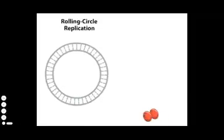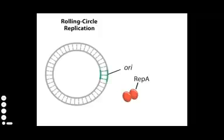In rolling circle replication, a replication initiator protein called RepA binds to a section of the double-stranded DNA called the origin of replication, or ORI. RepA is encoded by a plasmid gene.